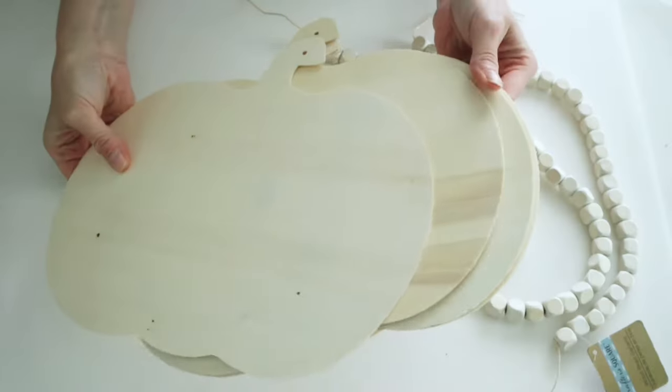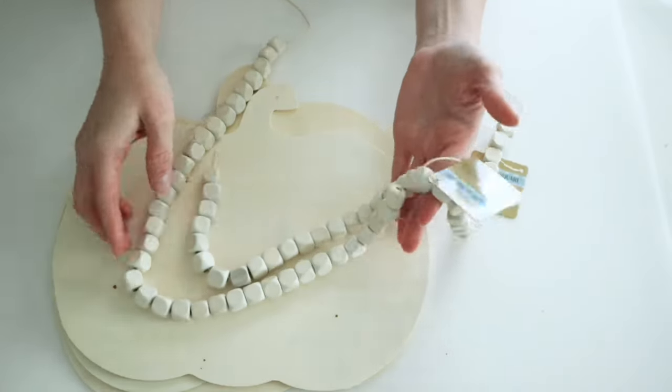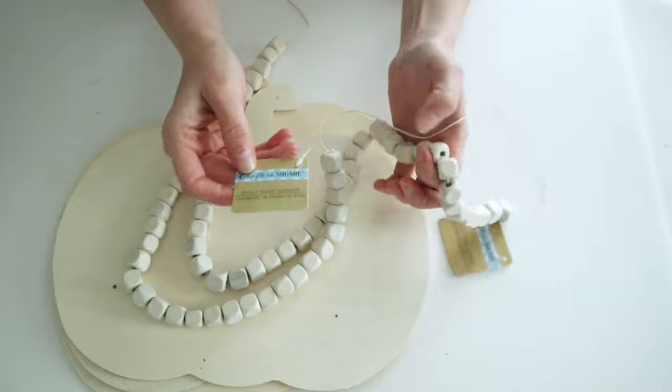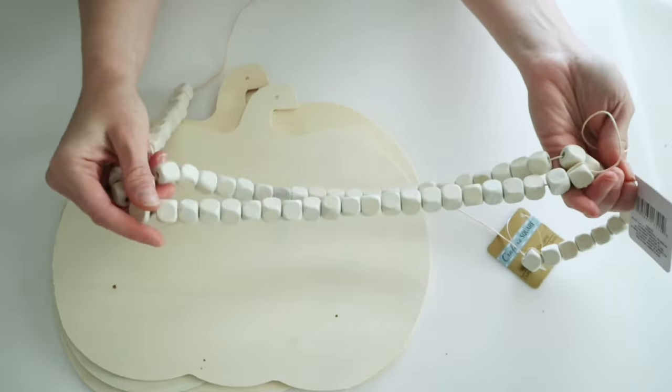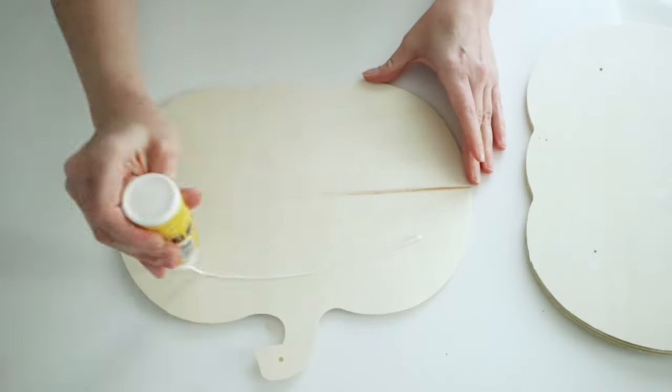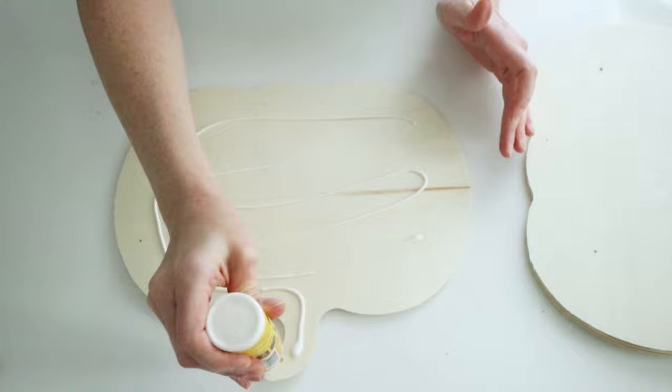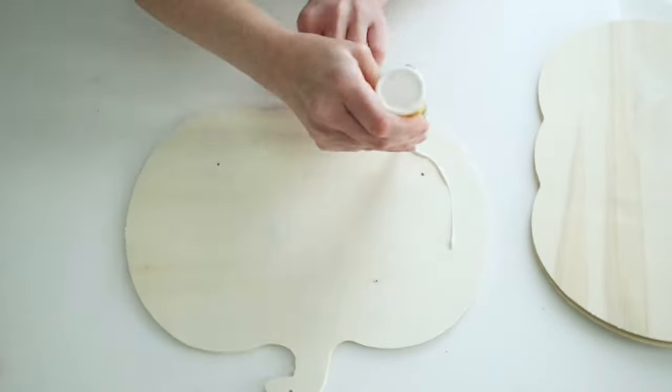This next project is probably one of my absolute favorites. I'm going to be making a pumpkin tray. So I picked up four of these wood pumpkins and then two sets of these bead garlands from Dollar Tree. If you can't find these, you can of course just use regular beads.